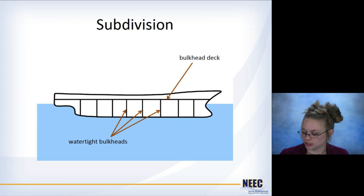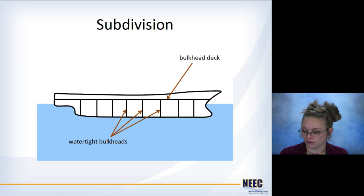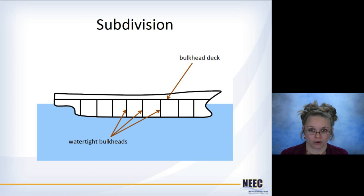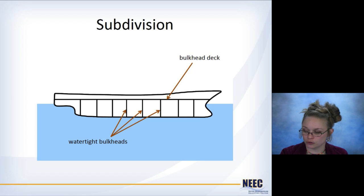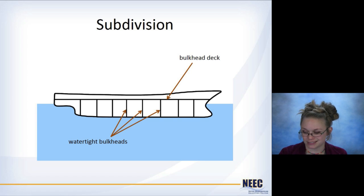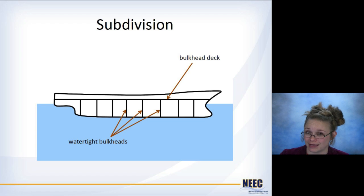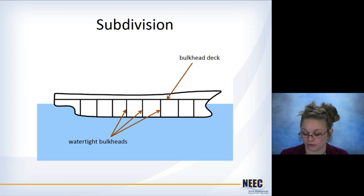First, some terminology. Here's a little cross section of a ship. You have watertight bulkheads, which are just walls that are watertight — no water can get through. These lead up to a bulkhead deck, which is also watertight. You might recall that this was the Titanic's problem: it had the watertight bulkheads, but not the bulkhead deck, so water was able to spill from one space into another. We no longer have that problem.